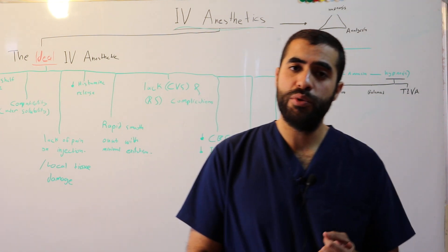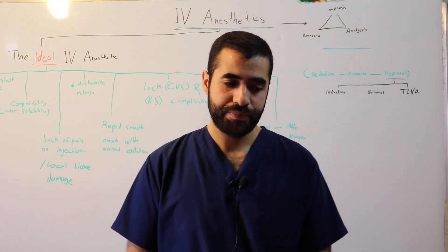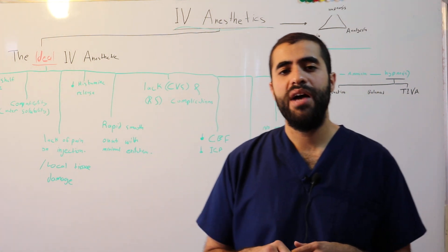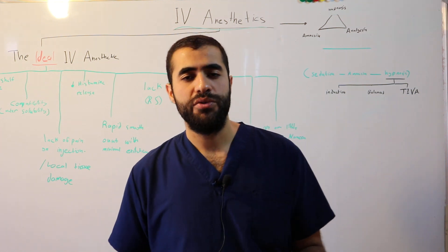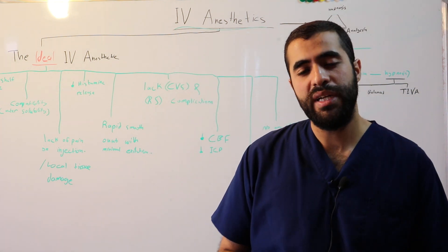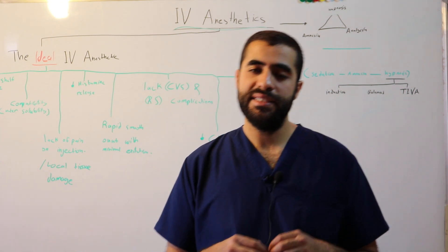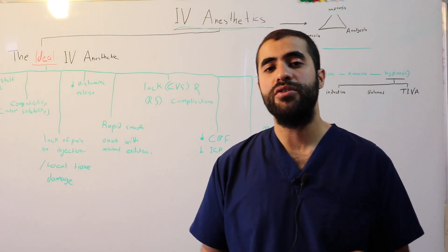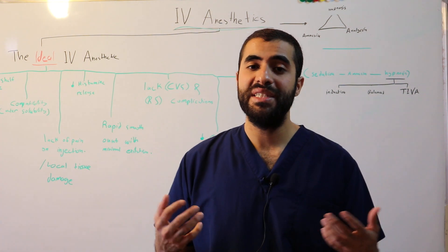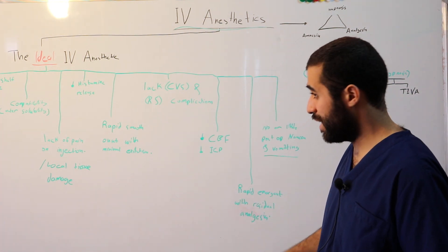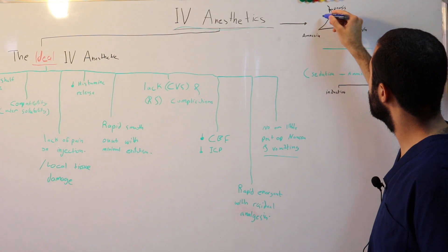So the three most important components of general anesthesia are hypnosis, analgesia, and amnesia. In addition, in some procedures you have to relax the patient's muscles to ease access for the surgeon to his target organ — for example, the appendix. Muscle relaxation is not a component of the triad of anesthesia, but it is an important component in some procedures.